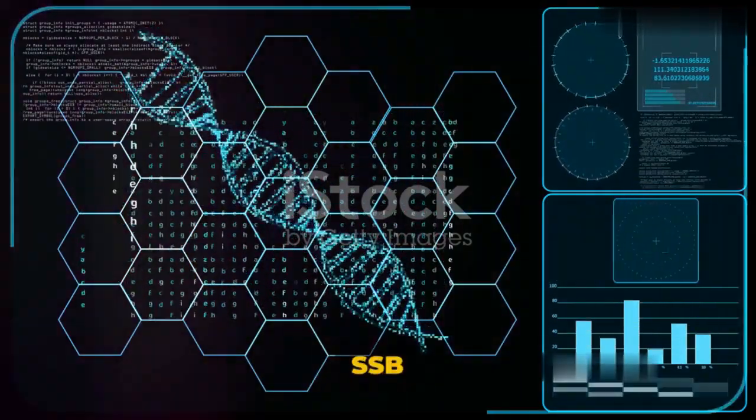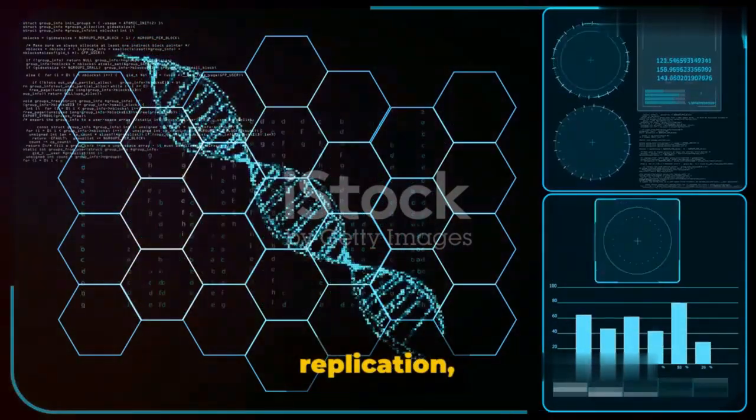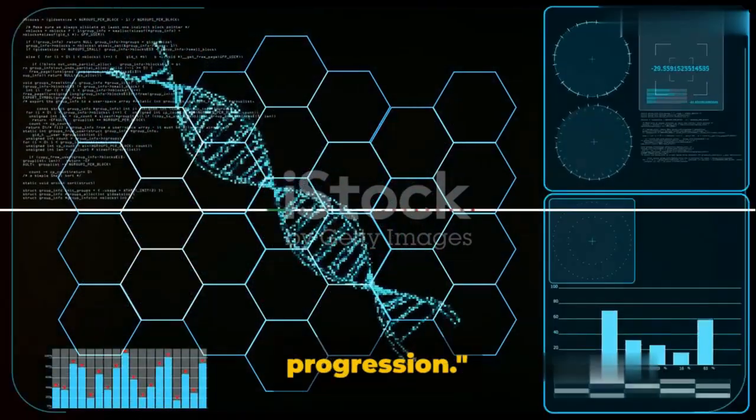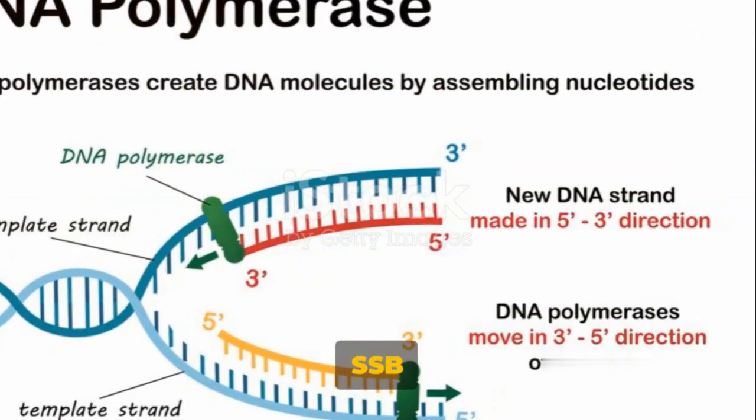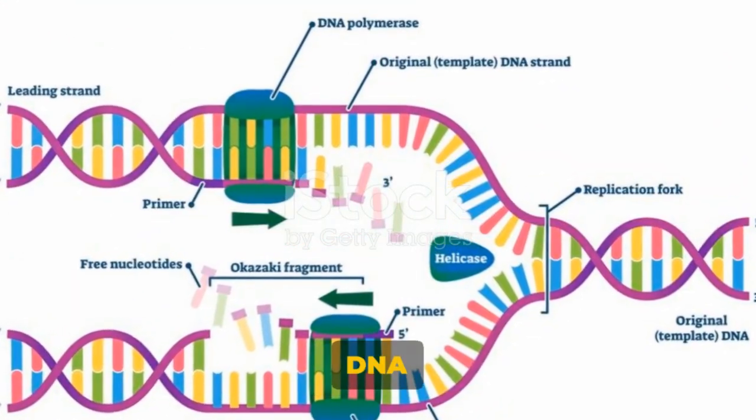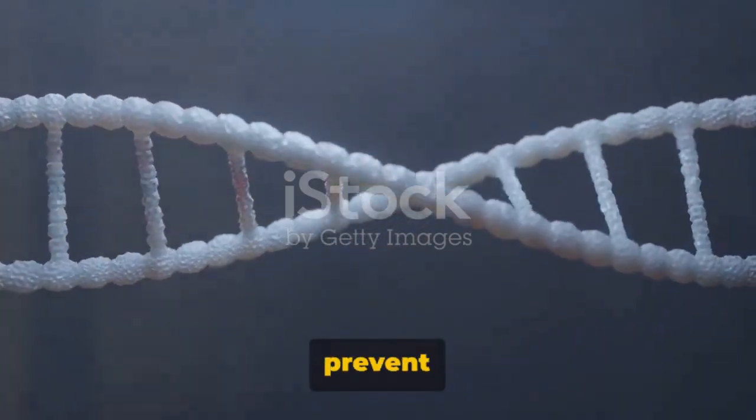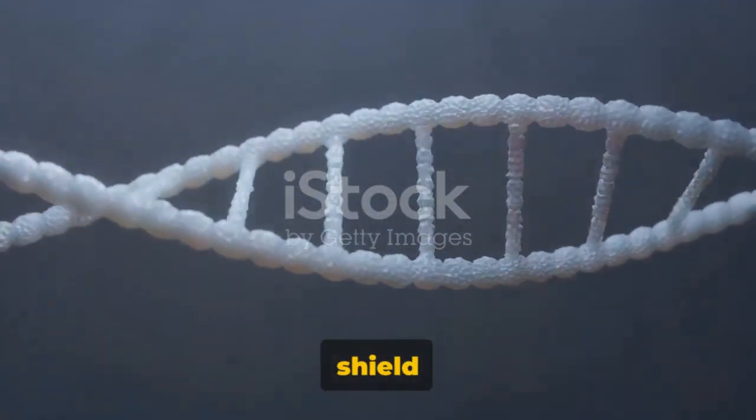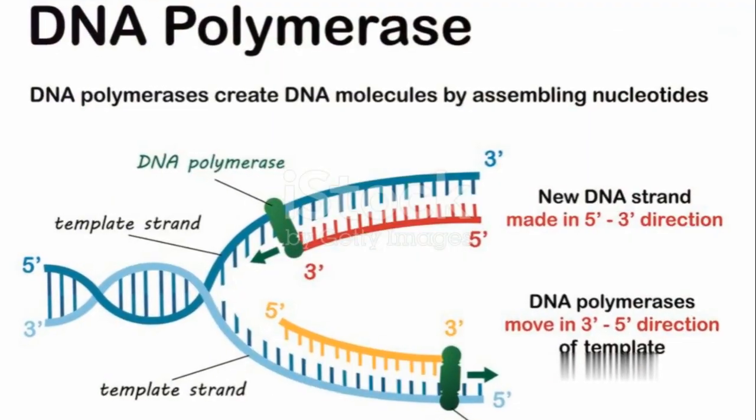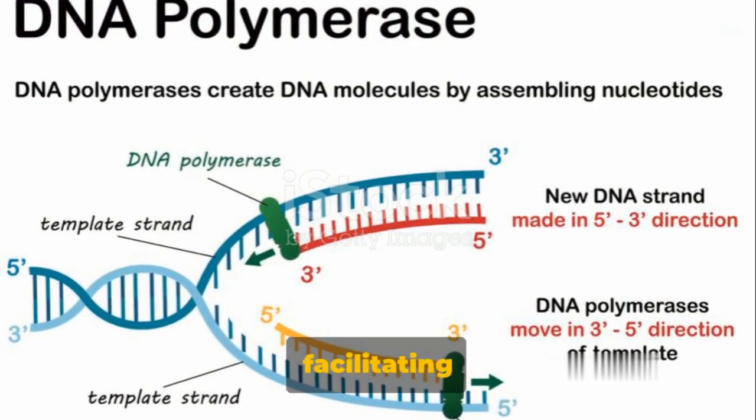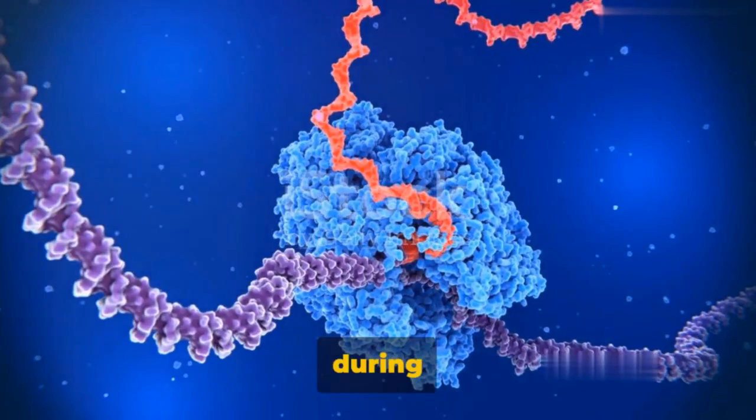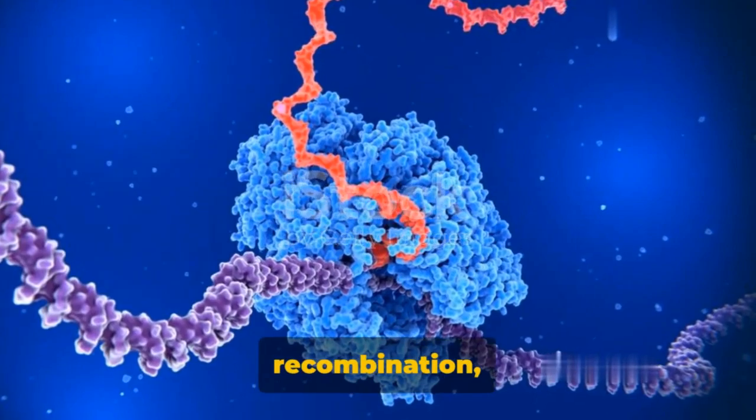Thus, SSB proteins are not just facilitating DNA replication, but also ensuring genomic progression. So, how do SSB proteins contribute to DNA replication? They play pivotal roles. They prevent strand hardening and shield strands from degradation. They assist DNA polymerase, facilitating its grip on the DNA during replication, recombination, and repair.